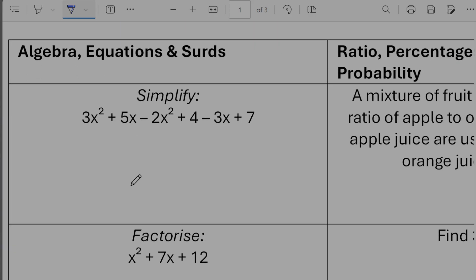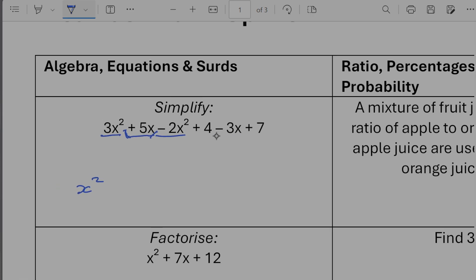Simplify 3x squared plus 5x minus 2x squared plus 4 minus 3x plus 7. So I'm going to collect it together. First of all, my x squared. So that's going to give me 3x squared minus 2x squared would give me x squared. Now I want my x's. So for my x's, I've got 5x minus 3x. That's going to give me plus 2x. And then my number part, I've got a plus 4 and then a plus 7. So that's going to give me plus 11.